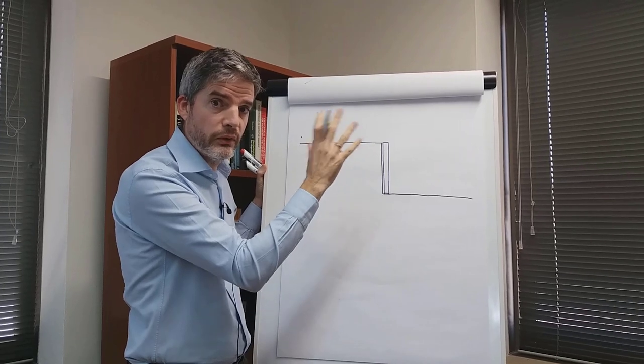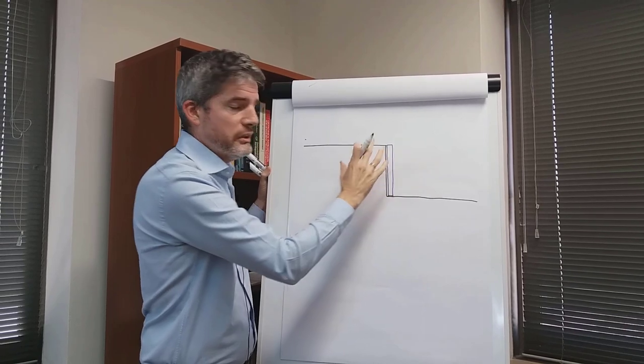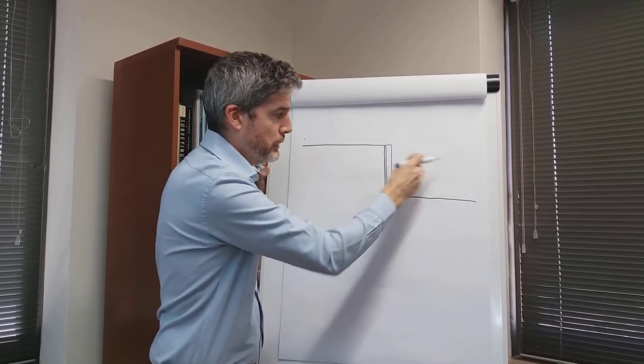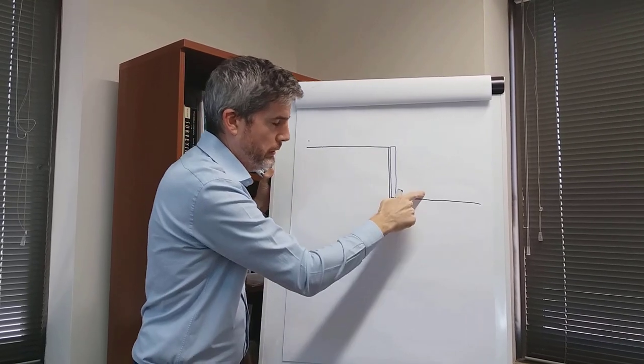So we need some form of retaining wall here, some sort of structure. Maybe somebody will write in with a question about types of retaining wall. For the moment we'll just stick to a generic retaining wall, some structure that is going to prevent the collapse of this soil.